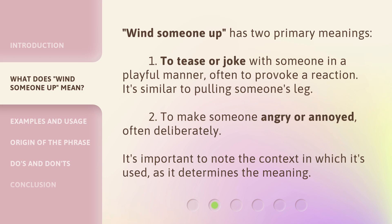Wind Someone Up has two primary meanings. One: to tease or joke with someone in a playful manner, often to provoke a reaction — it's similar to pulling someone's leg. Two: to make someone angry or annoyed, often deliberately. It's important to note the context in which it's used, as it determines the meaning.